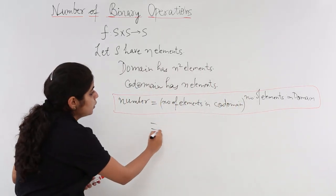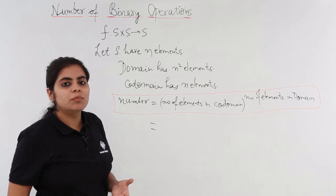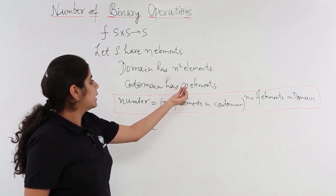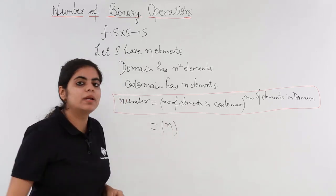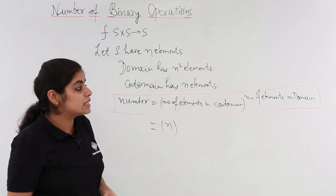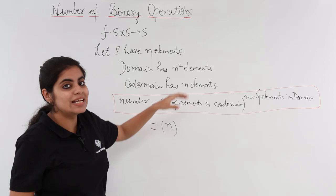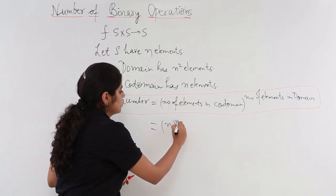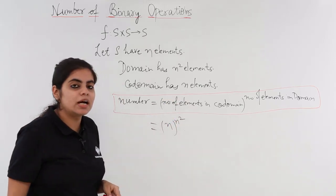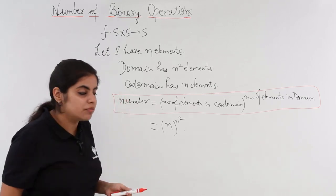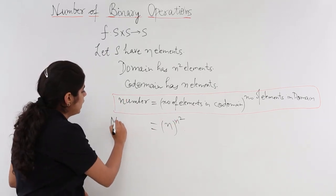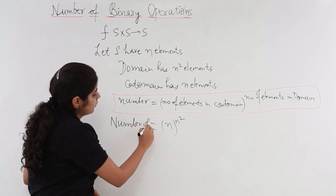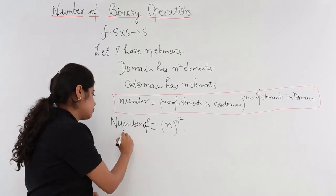Now number of elements in codomain, what is the number of elements in codomain? Codomain has n elements, so it is n. Then we have a bracket. What is the number of elements in domain? Domain has n square elements. So the formula becomes n to the power n square. So this is the formula. This is required formula for number of binary operations.